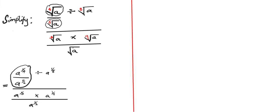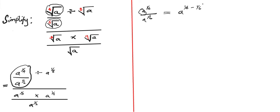Let's concentrate on a to the power one over four divided by a to the power one over six. According to the law of indices, when dividing we subtract the powers and keep one base. So we get a to the power one over four minus one over six.